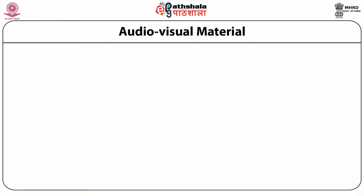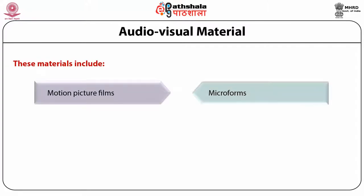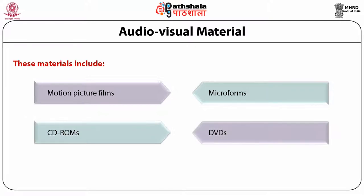Audio-visual material. Audio-visual material is a generic term to describe information content held in storage and transmission media and formats that use images and sounds, rather than or sometimes in addition to textual matter. These materials, also called instructional media materials, are educational aids that work primarily through the senses, especially hearing and seeing. The audio-visual material includes motion picture films, micro forms, CD-ROMs, DVDs, and photographs.